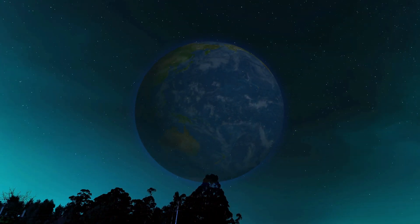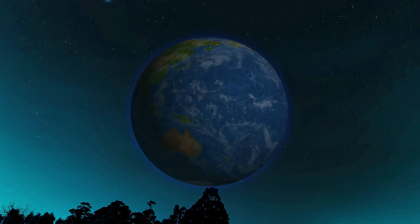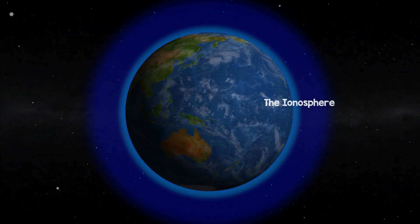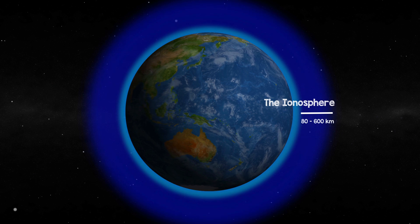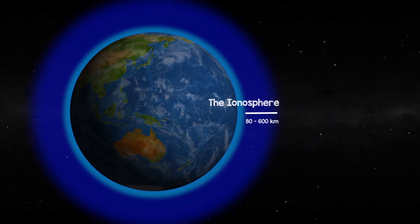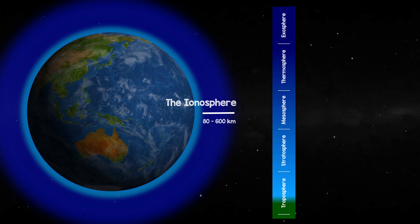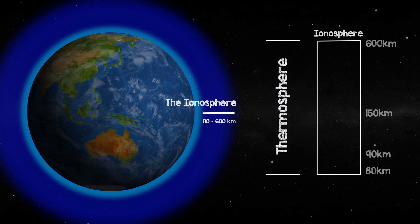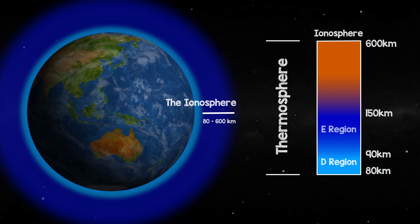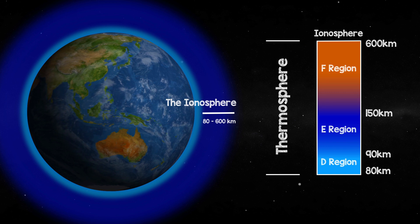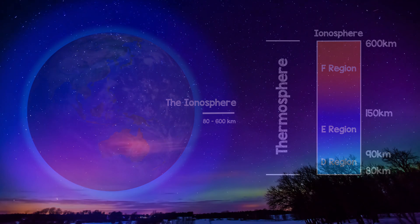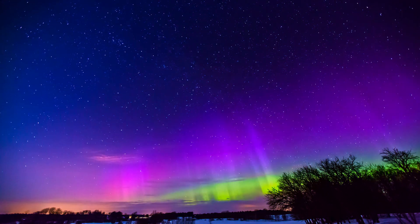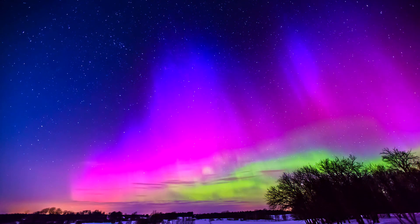The ionosphere is the ionised part of the Earth's upper atmosphere that extends from about 80 to 600 kilometres above sea level. It's a region within the thermosphere filled with charged particles that play a crucial role in radio communication by reflecting radio waves back to Earth. It also contributes to the occurrence of auroras and is ionised by solar radiation.